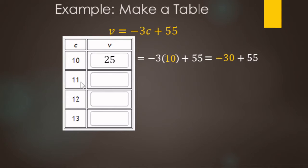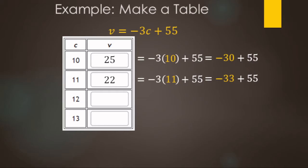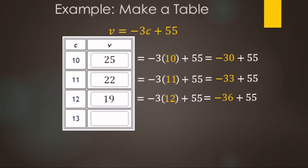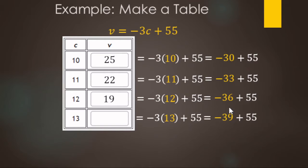For 11 cakes: negative 3 times 11 is negative 33, plus 55 makes 22. For 12 cakes, we replace C with 12: negative 3 times 12 is 36, plus 55 makes 19. For 13 cakes, we replace C with 13: negative 3 times 13 is negative 39, plus 55 gives 16.